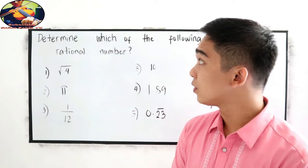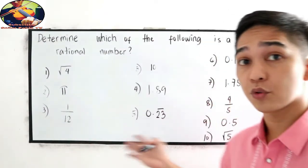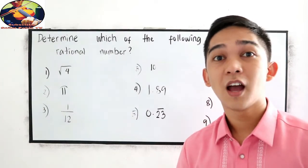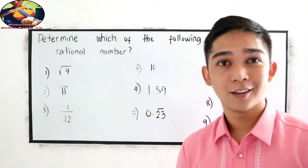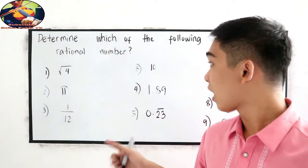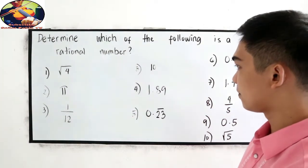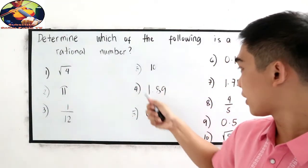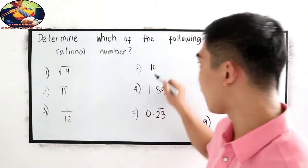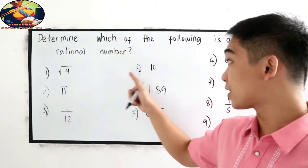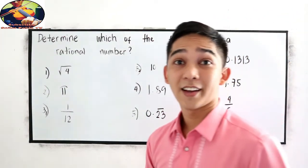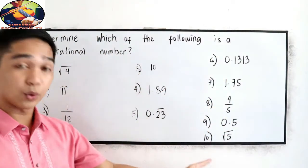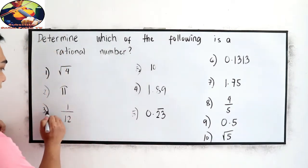Now let us determine which of the following numbers from one to ten are rational and which are not. I will answer numbers 1, 2, and 3a, then you will answer 3b up to number 10.